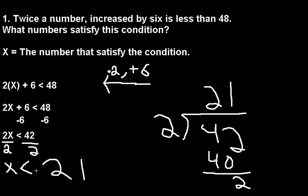x < 21. So this means our variable is going to be 21. 21 is the number that satisfies the condition.